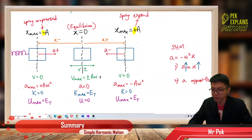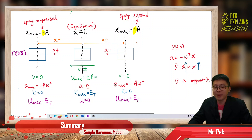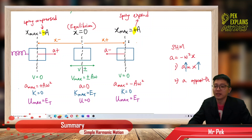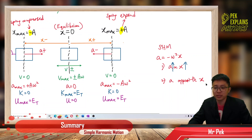When x is zero, acceleration is zero. When x is maximum — at the amplitude — acceleration is also maximum because acceleration is proportional to x. However, acceleration is always in the opposite direction to displacement.